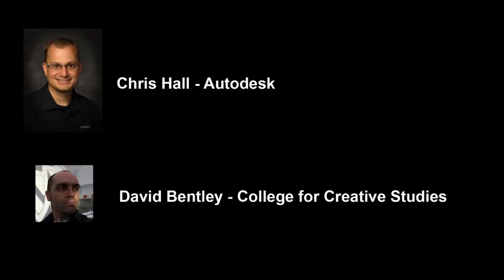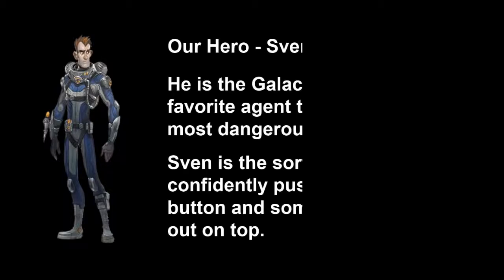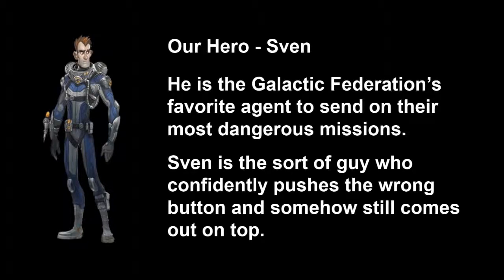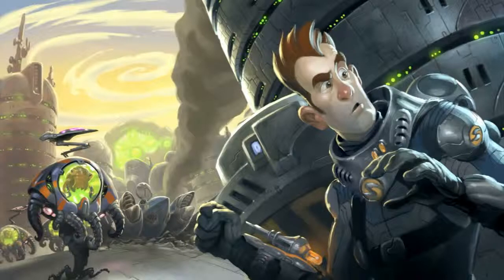Well, we have a fun project we're about to embark on with all of you. Let's do a little introduction. The character that we're trying to create — his name is Sven. He's a space adventurer, and he's the Galactic Federation's favorite agent that they send on their most dangerous missions. He's also kind of the sort of guy who confidently pushes the wrong button, but still comes out on top. I'm sure we can think of many examples of people in movies where this happens. The story is he's been dropped — or maybe kind of crashed — on planet SR-388.